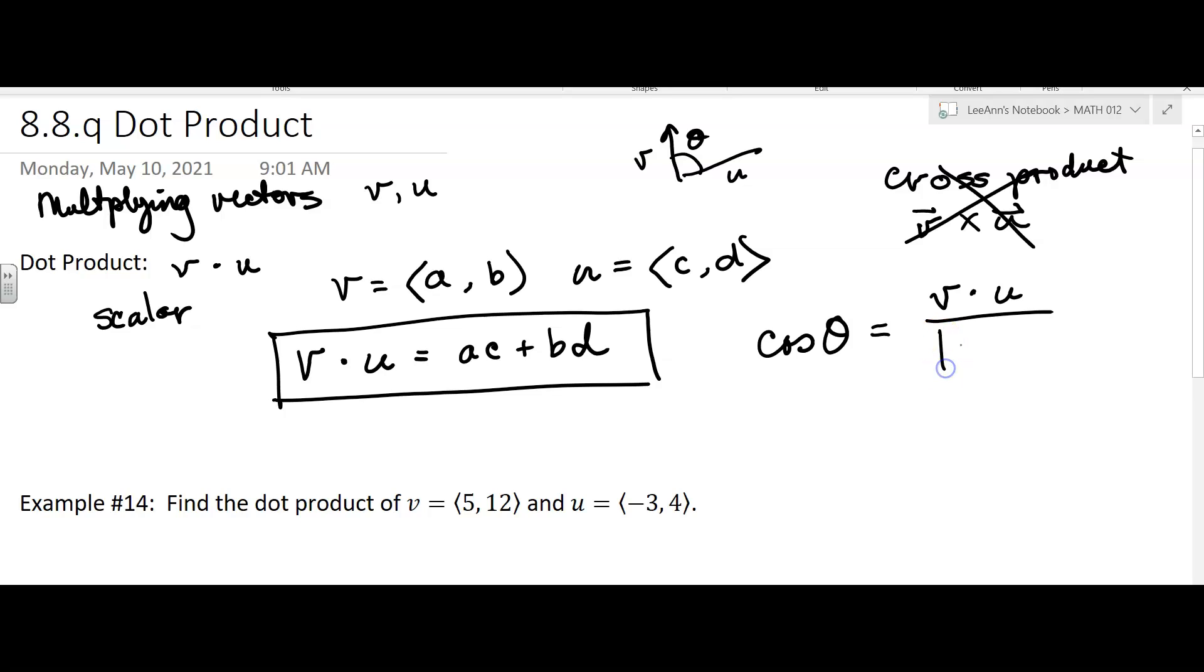Divided by the magnitude of V times the magnitude of U, and that's also a scalar down there because you're finding magnitude.